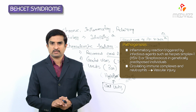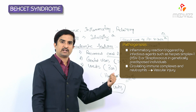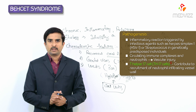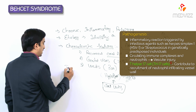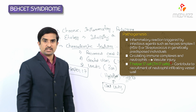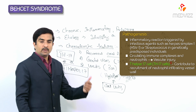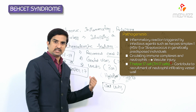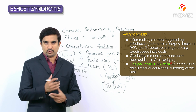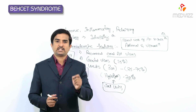Circulating immune complexes and neutrophils are considered part of the pathogenesis of Behçet's, leading to vascular injury. T helper 17 cells (Th17 cells) are important in the pathogenesis of Behçet's by contributing to neutrophil recruitment and infiltrating the vessel wall.